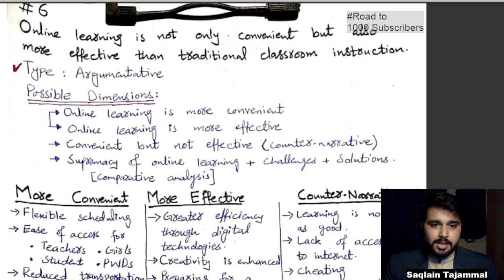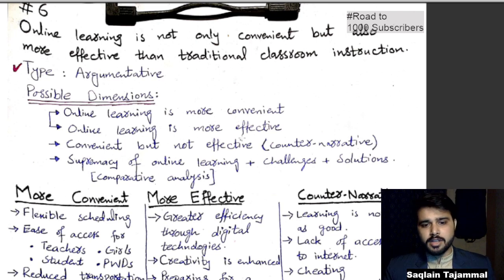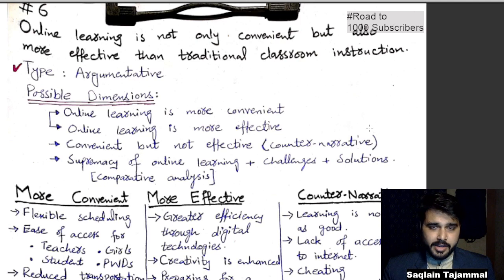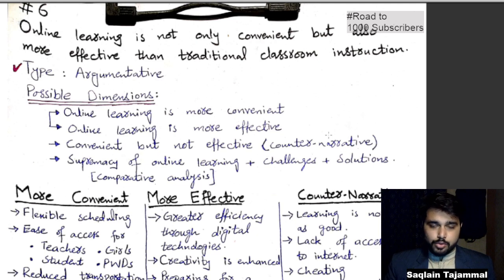In the first two dimensions, online education is more convenient — we will talk about that — and the other is that it is more effective as compared to traditional classroom instruction. My personal recommendation is that you should not go against the tide if you do not have sufficient knowledge or very concrete arguments. Do not say 'convenient but not effective' unless you can back it up.